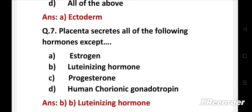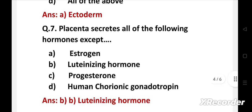Right answer is option B: luteinizing hormone. Luteinizing hormone is produced by gonadotropic cells in the anterior pituitary gland. All other hormones are secreted by placenta.